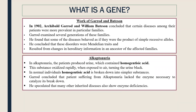An example is alkaptonuria, in which patients produce urine containing homogentisic acid. When exposed to air, this substance oxidizes and turns black. In normal individuals, homogentisic acid is broken down into simpler substances.